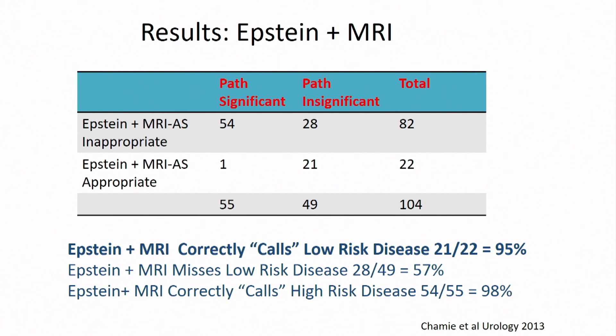Regarding the negative predictive value of MRI for active surveillance: we published a paper looking at the ability of MRI to aid traditional Epstein criteria for prediction of truly low-risk cancer. If you combine MRI together with Epstein criteria, you miss only one case of an aggressive cancer. The absence of a visible lesion on MRI together with traditional clinical parameters of low-risk cancer improves identification of tumors that are low grade and could be surveilled.